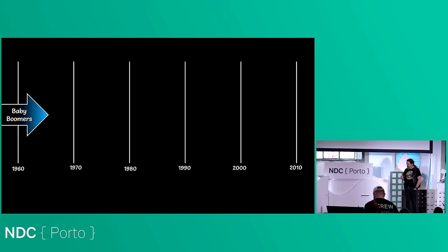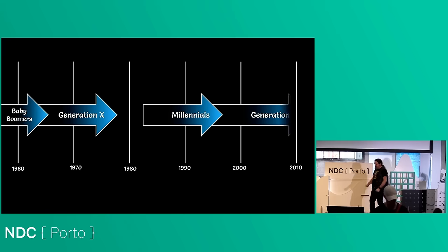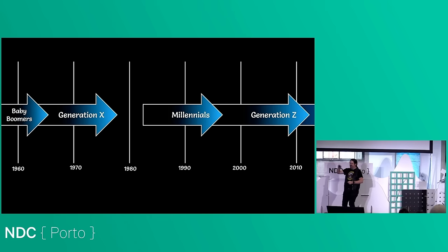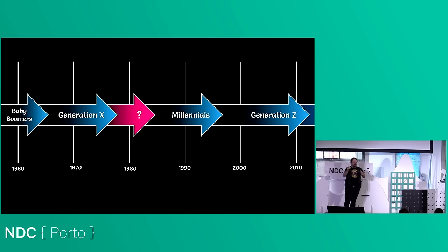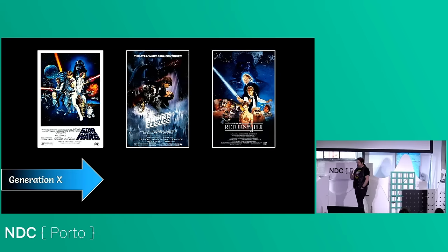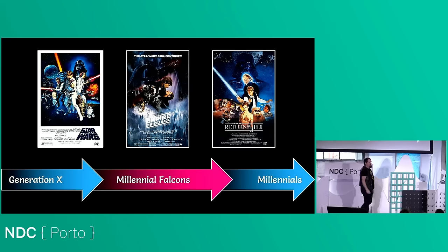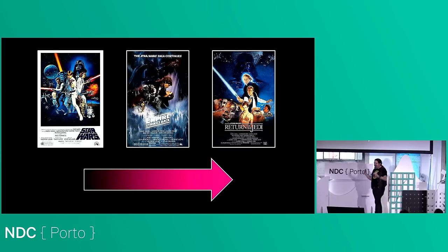There's a demographic gap like Generation X born before Star Wars, millennials born after Return of the Jedi — the people in between, born from 1977 to 1983, are the 'Millennial Falcons,' the micro generation. And the greatest Millennial Falcon of them all is the internet as we know it. When Star Wars came out in 1977, the ARPANET used the NCP — Network Communication Protocol — TCP/IP didn't exist, everything was done using the hosts file, and junk mail had not been invented yet.